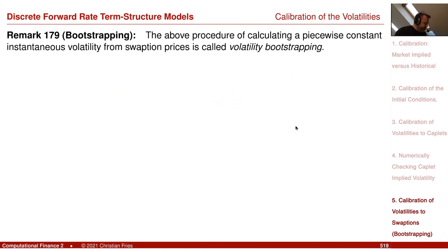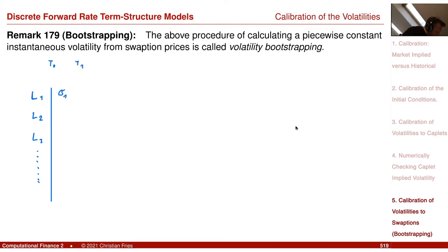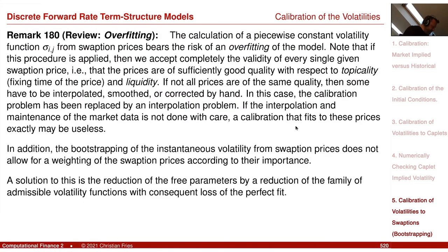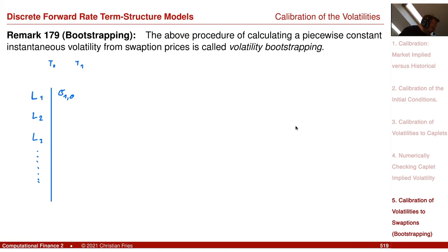We have now a piecewise constant time structure with quite fine discretization. The volatility calibration procedure is called bootstrapping — stripping out the sigma parameters from observed financial products. A last remark: there is a risk of overfitting with many parameters, especially if the observed financial products are not liquid or not consistent.